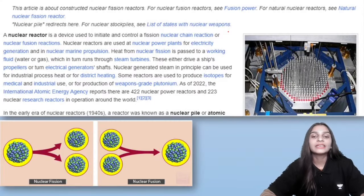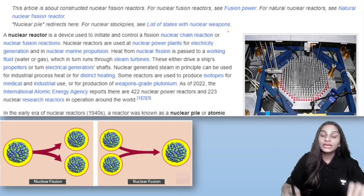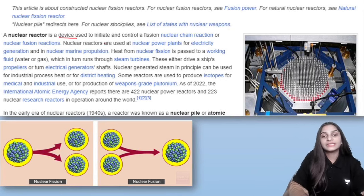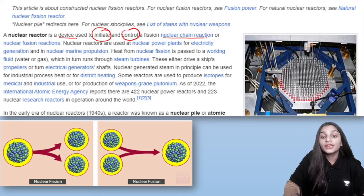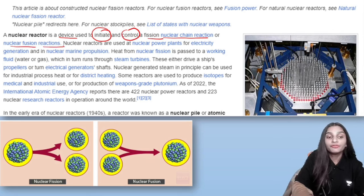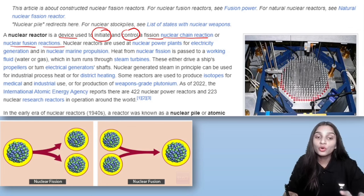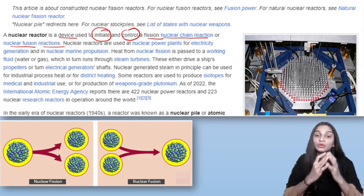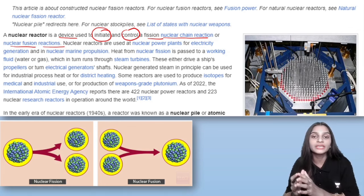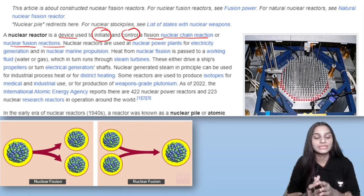First, let's understand what a nuclear reactor is. A nuclear reactor is a device that can be used to initiate or control nuclear chain reactions — both nuclear fission and nuclear fusion. Let's understand a little bit about these two processes.